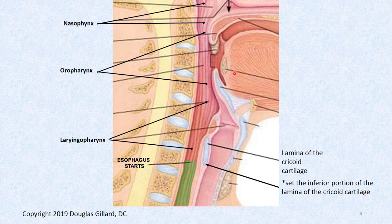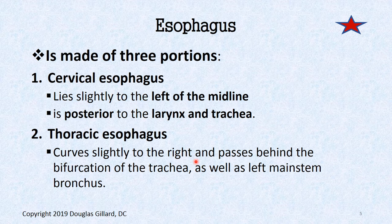Here's a nice mid-sagittal cut of the head. You can see the vertebrae and discs. The esophagus starts right at the inferior portion of the lamina of the cricoid cartilage. It has three portions: the cervical esophagus, which is a little off-center to the left of the midline — posterior to the larynx, the voice box, and the trachea. Your food goes down behind; your air breathes in the pipe in front. Then there's a thoracic esophagus, curved slightly to the right, passing behind the bifurcation of the trachea and the left main stem bronchus.